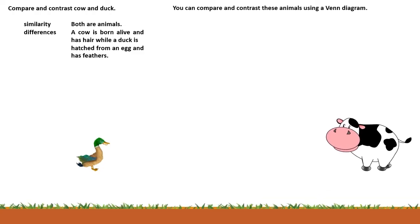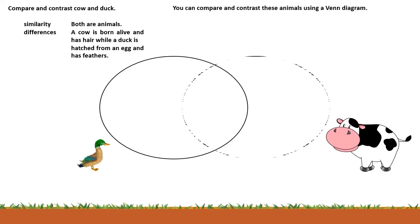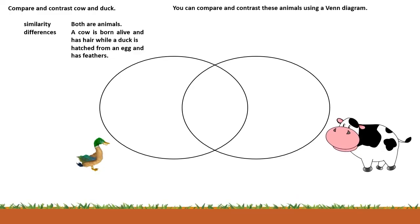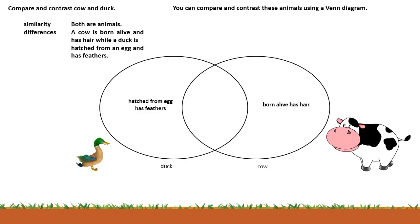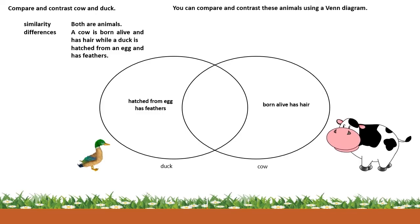You can compare and contrast these animals using a Venn diagram. A Venn diagram consists of overlapping circles. Using two circles, there are three sections: first, middle, and last. The first section is for the duck, the last section is for the cow, and both outer sections show the differences of each animal. For the duck: hatched from egg and has feathers. For the cow: born alive and has hair. The middle section talks about the similarities — so our answer would be animals. This is how a Venn diagram works.